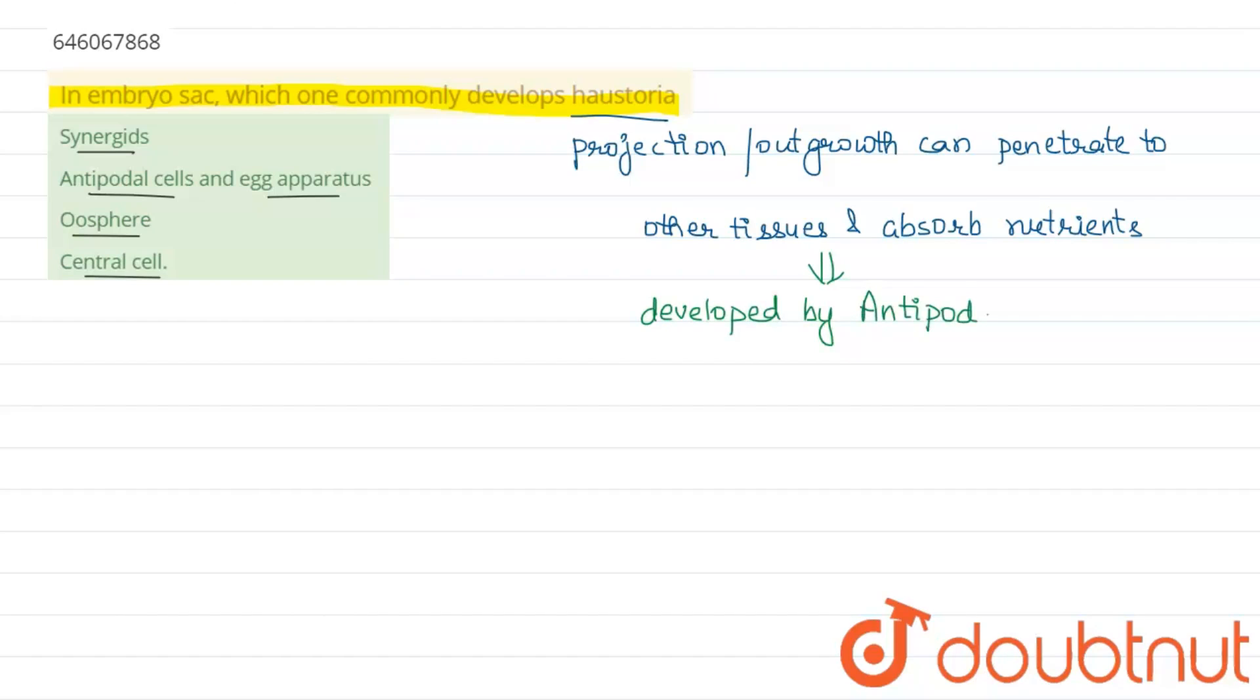These antipodal cells are present in the embryo sac. The antipodal cells have a nutritive function as they provide nutrients for the embryo sac, and hence the developing haustoria will aid in the nutrient absorption from the nearby tissues.